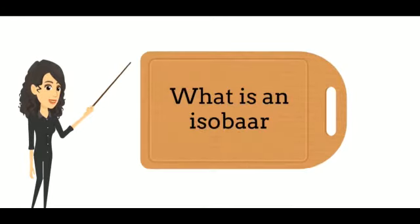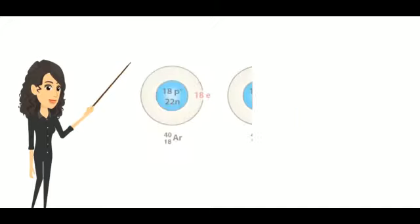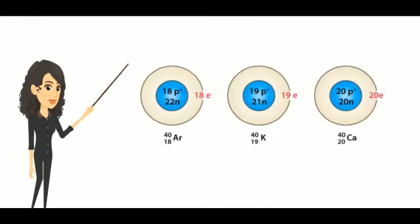Isobars are atomic species which have the same mass number but different atomic number. This is the example of isobar.